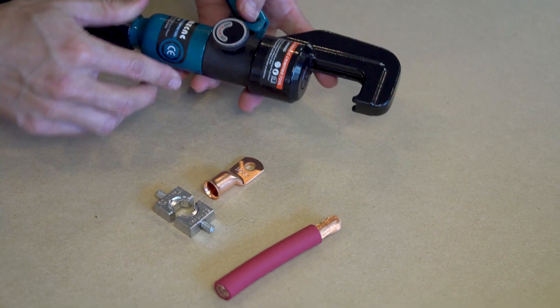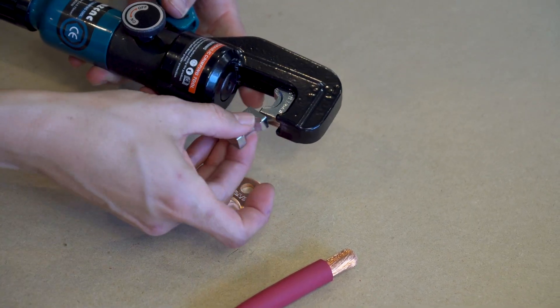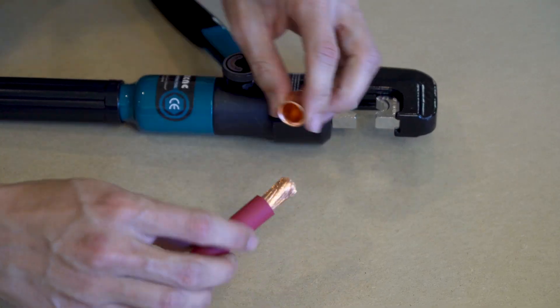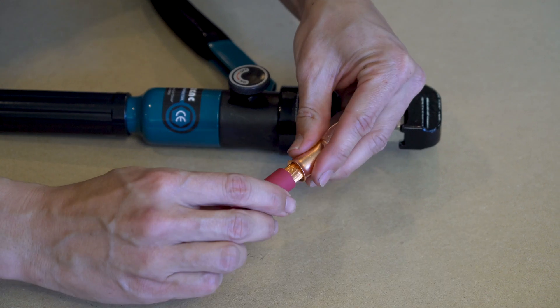When you're ready, insert the dies into the crimper. Then, insert your wire into the lug, making sure you catch every single wire strand.